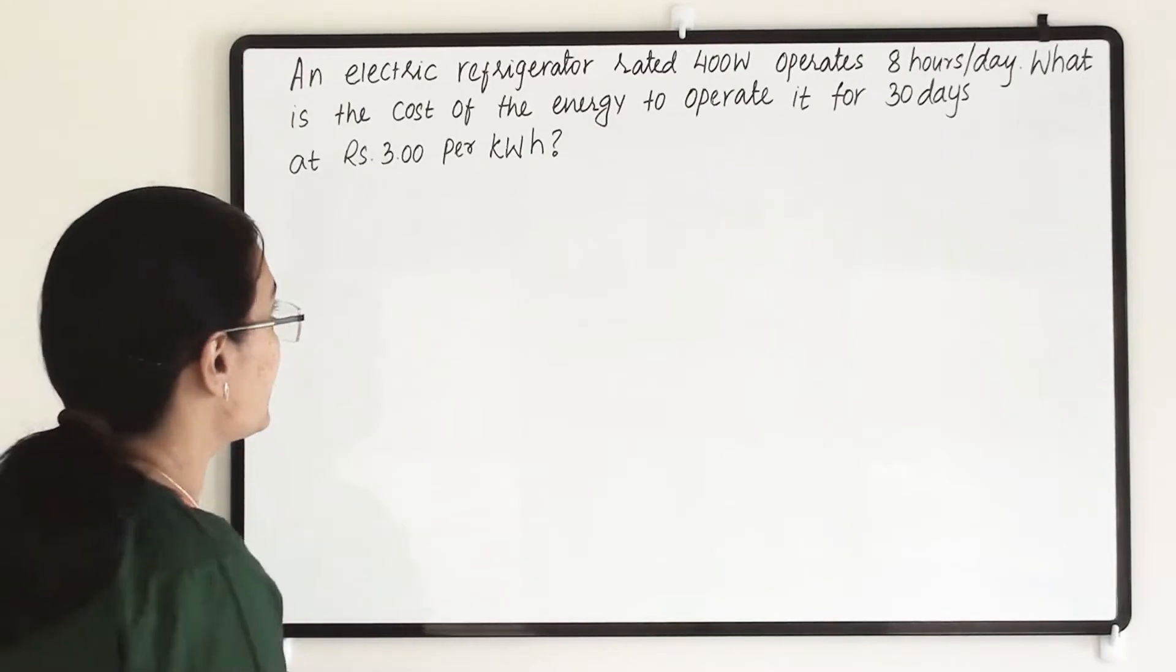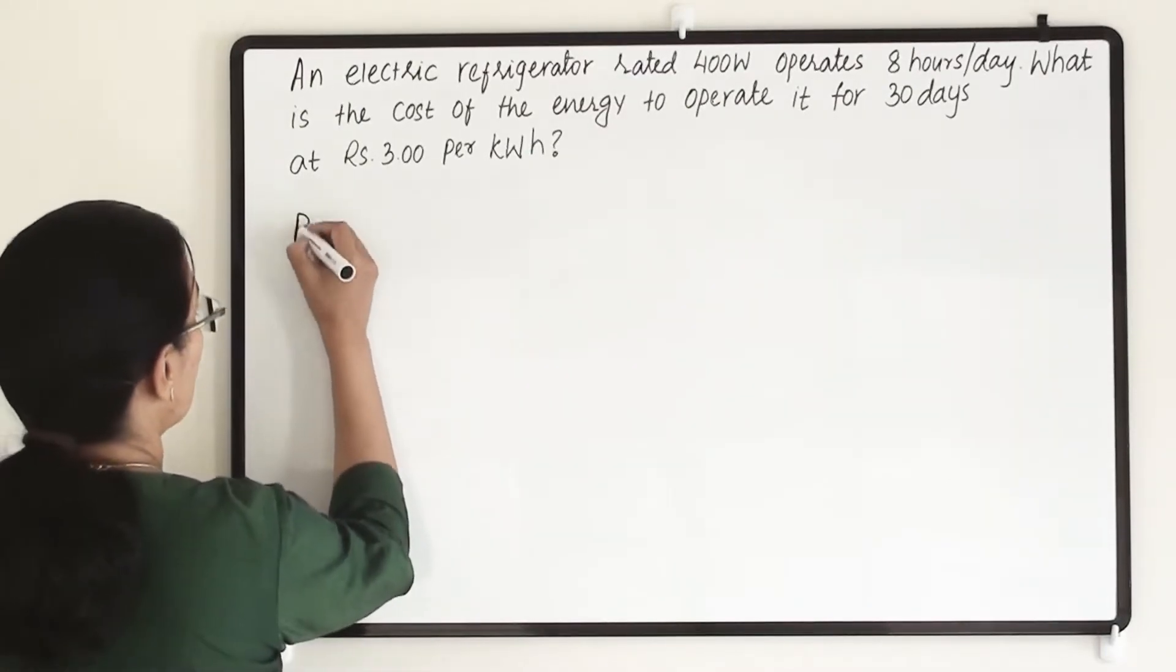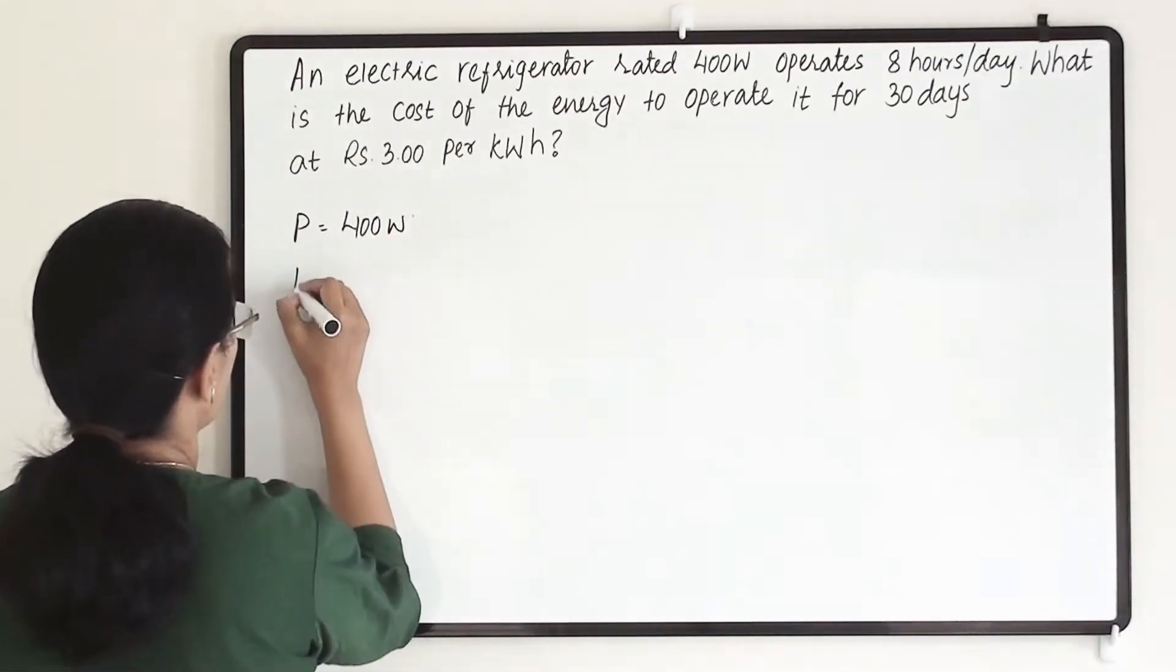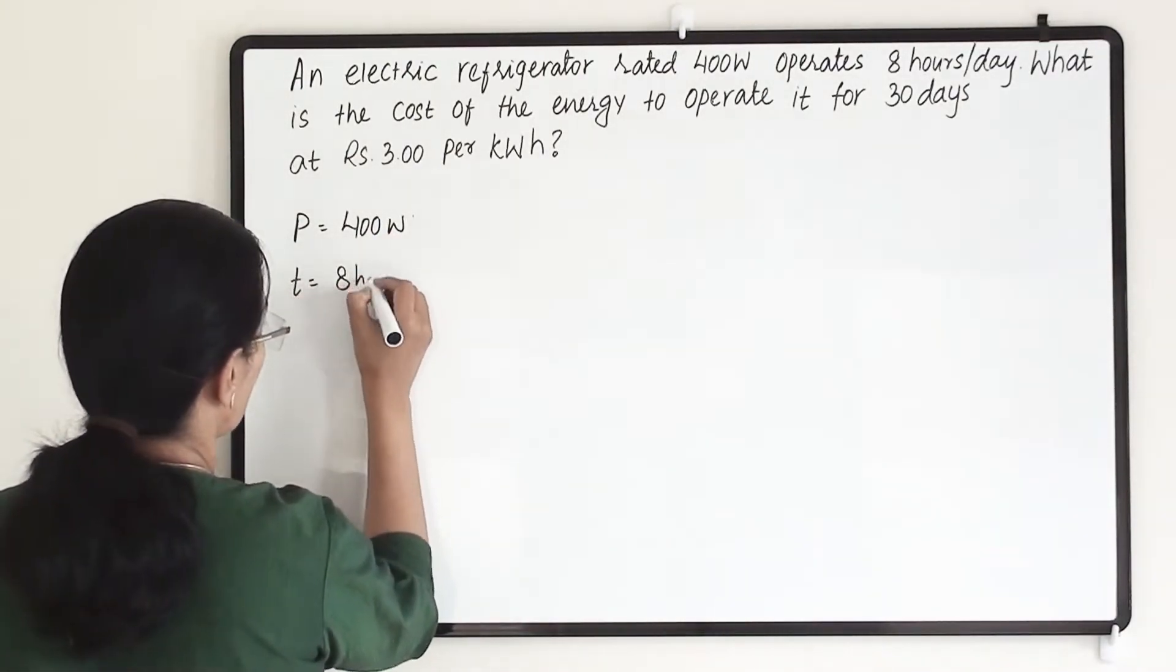So here what all details they have given us is P equals to 400 watt and time they have given is 8 hours per day.